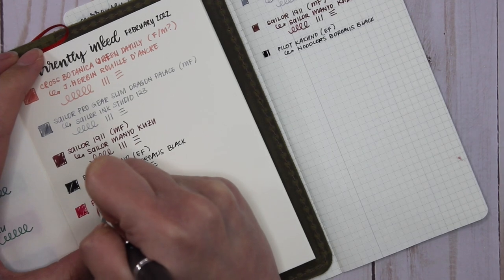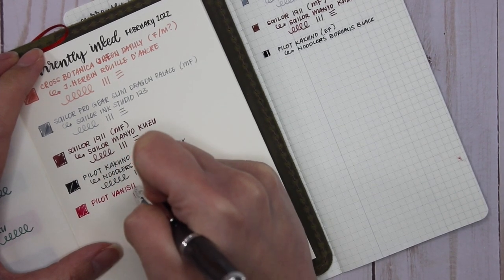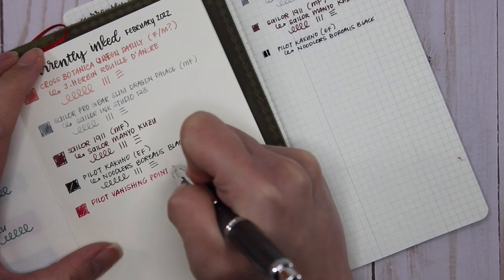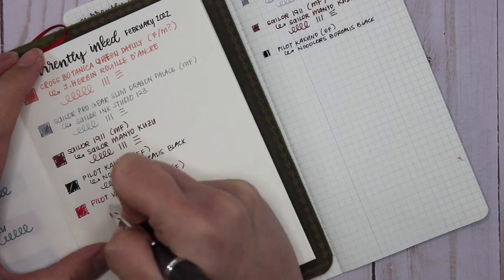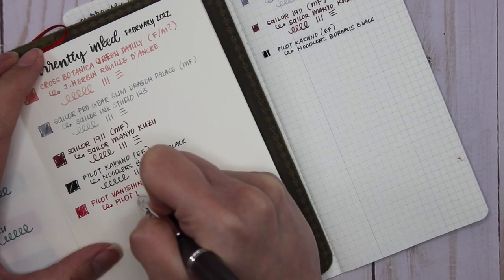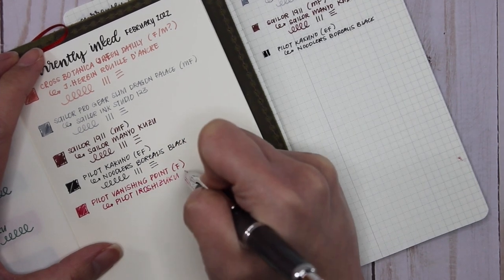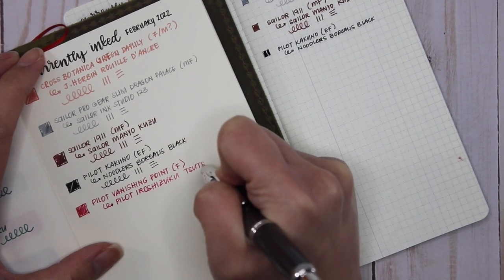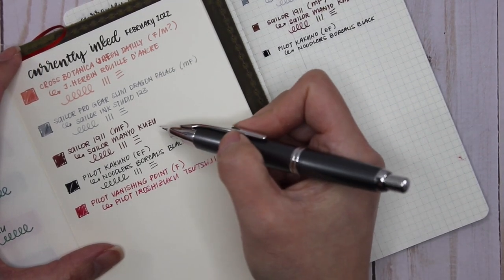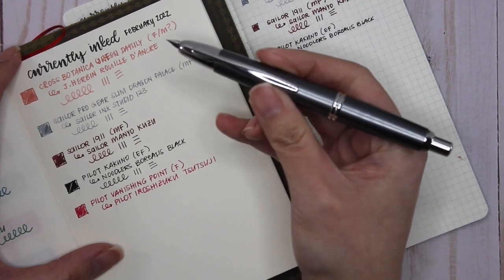So Pilot Vanishing Point, and I have this in a fine because I do generally have small writing. And it has Pilot Iroshizuku Tsutsuji. So you can see kind of the theme that I've gone here—there's some pinks, a dark burgundy I guess, and then a pink here. And this one will mostly be for my five-year journal, and then the rest I tried to find inks that would go along with the stickers that I plan on using in my planners this month.